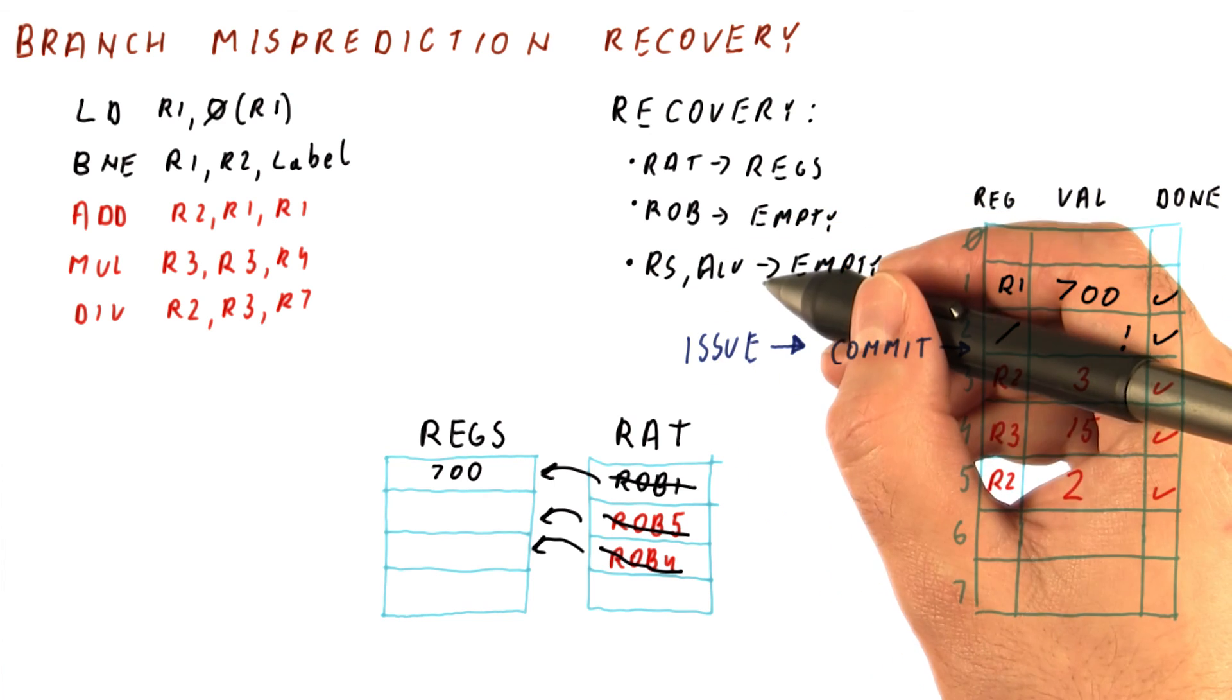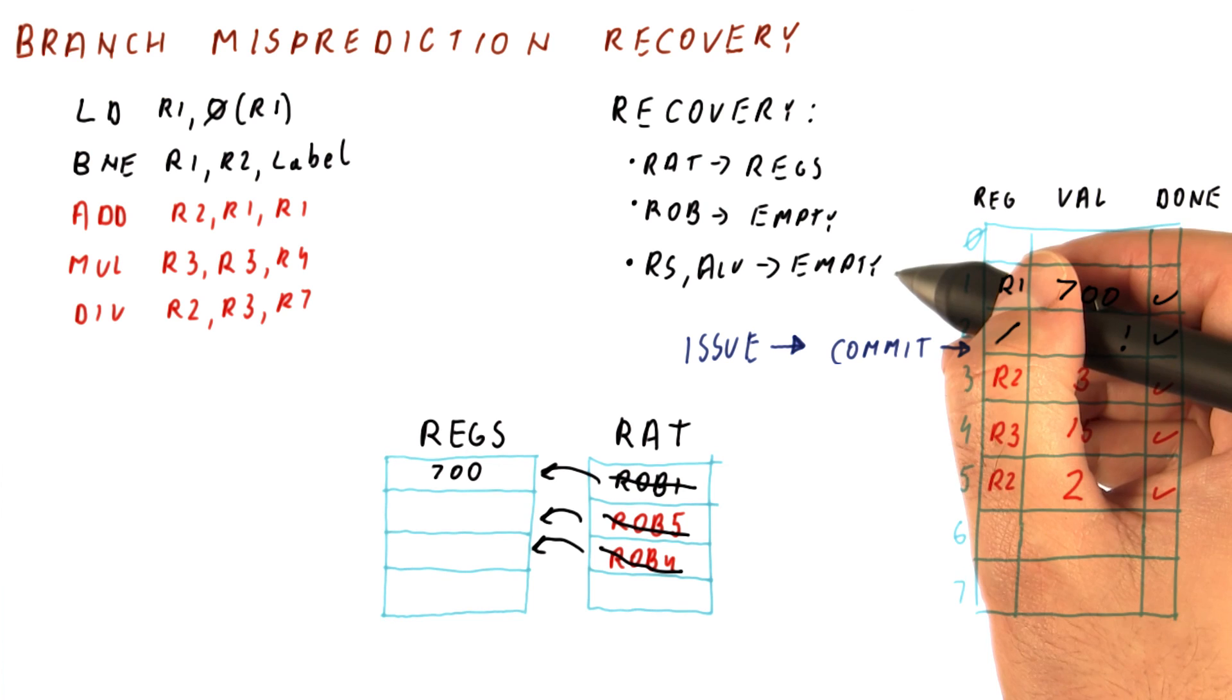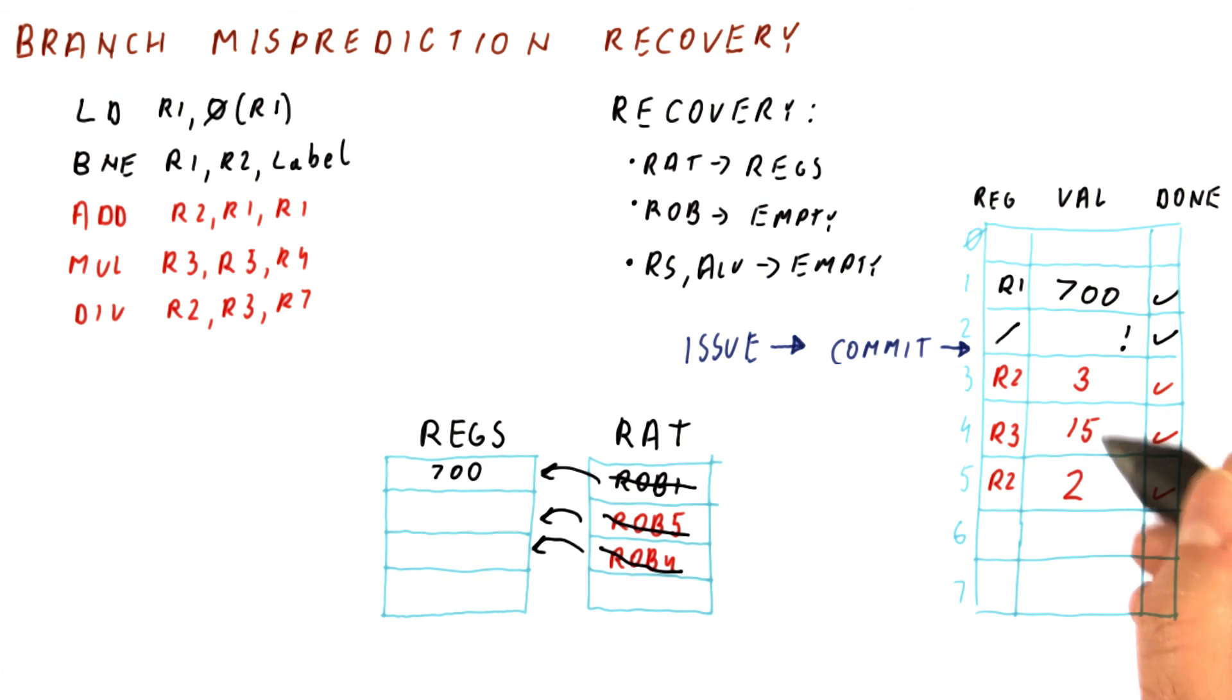So basically free all the reservation stations and stop the ALUs from broadcasting results in the future. So if one of these instructions is still in the ALUs or reservation stations, it's going to be just dropped.